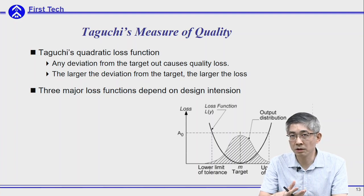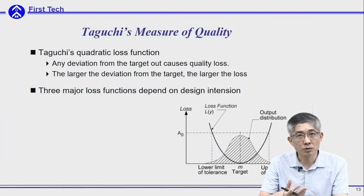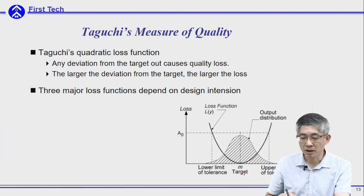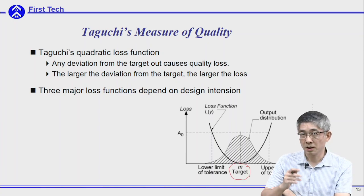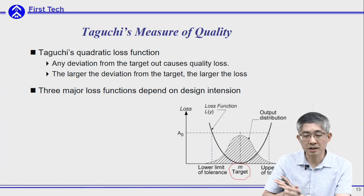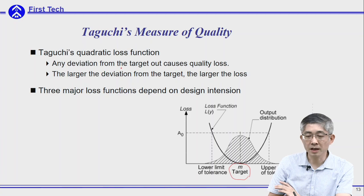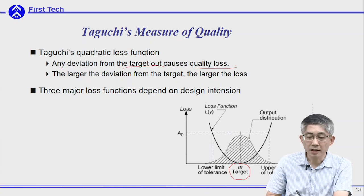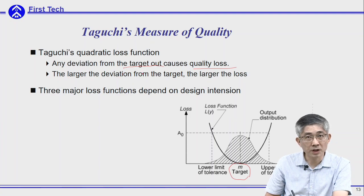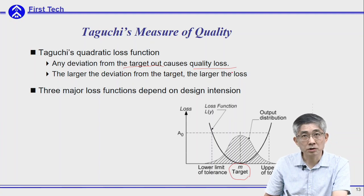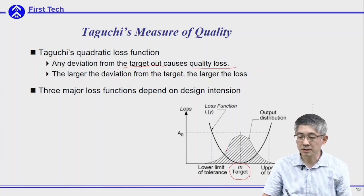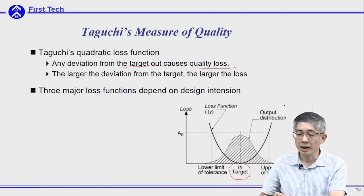Therefore, Taguchi proposed another concept — another measurement of quality using a quadratic function. The basic idea is: if we have a target M, any output that deviates from the target will cause some loss. The larger the deviation from the target, the larger the loss.